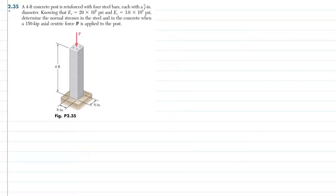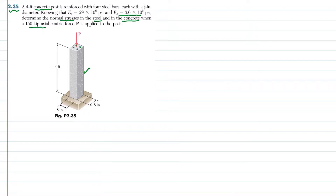Welcome back. Problem 2.35. In this problem, a 4-foot concrete post is reinforced with 4 steel bars, each with a diameter of 3/4 inch. The modulus of elasticity for steel and for concrete is 3.6 × 10⁶ psi. We need to determine the normal stress in steel and in concrete when a 150-kip axial centric load is applied.